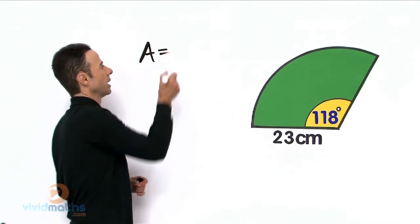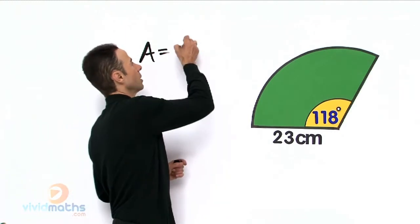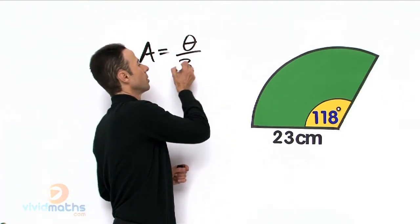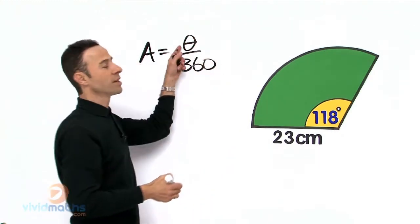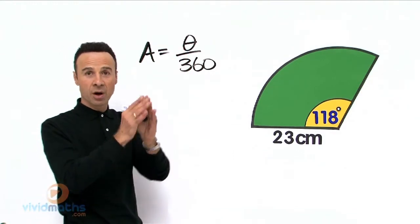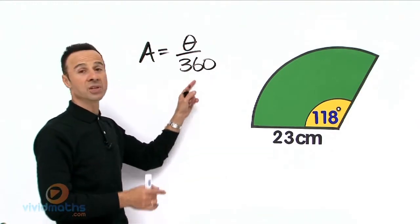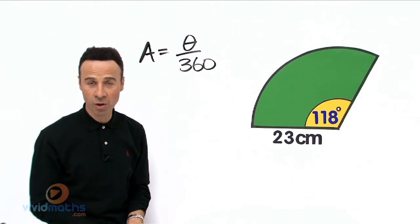Area equals theta over 360. Theta is the angle of the bit of the whole thing, and 360 of course is the whole thing—that is a whole revolution.